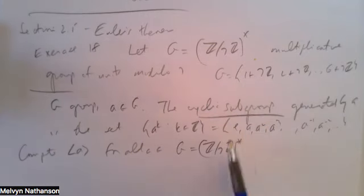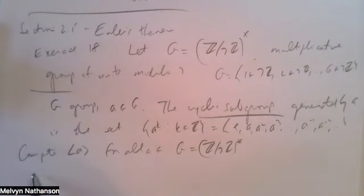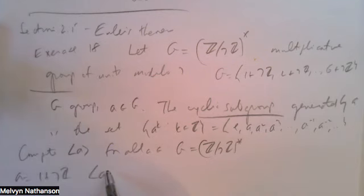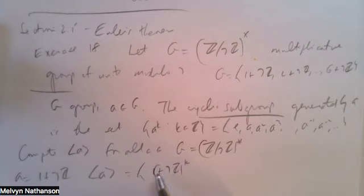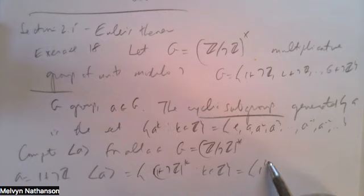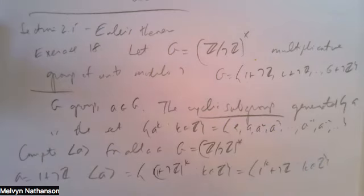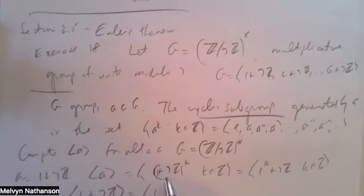We have to look at six different cyclic subgroups. If I take A equal to 1+7Z, the cyclic subgroup generated by A is just the set of all powers of 1+7Z. But 1 to any power is just 1, so the cyclic subgroup generated by 1+7Z is just the one-element subgroup consisting of the multiplicative identity, 1+7Z.